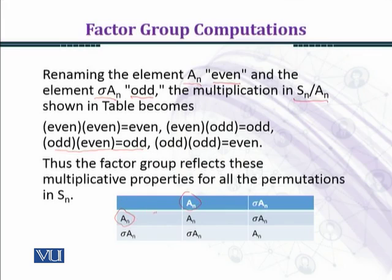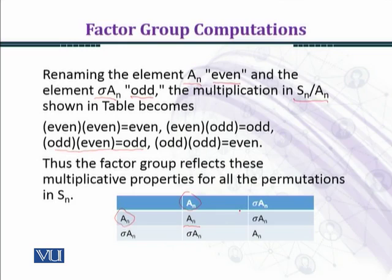In the coset multiplication: A_n times A_n gives A_n, and A_n times sigma·A_n gives sigma·A_n. We are using the idea of coset multiplication, and you know that the identity permutation applied to sigma gives sigma, so the representatives are taken from S_n.